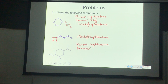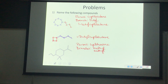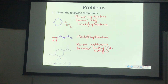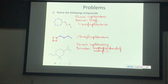Let's name the cyclic structure that looks a little spermy. That cycloalkane has how many carbons? One, two, three, four, five, six, seven, eight — eight carbons. Does everybody see that?